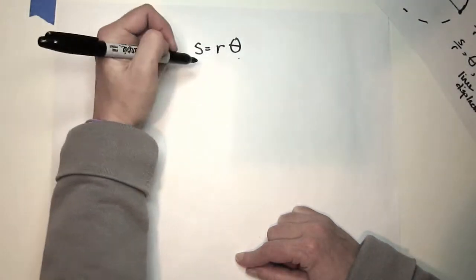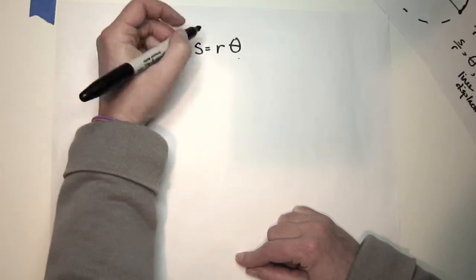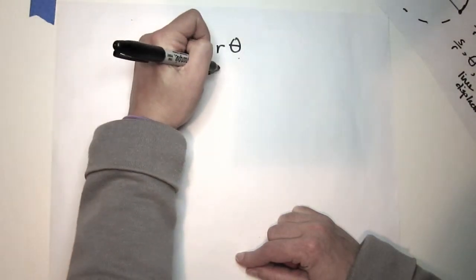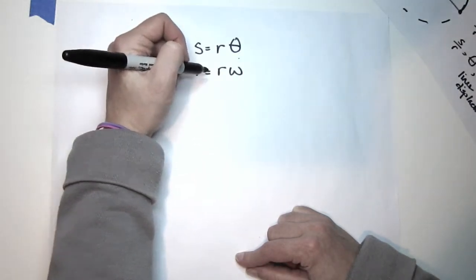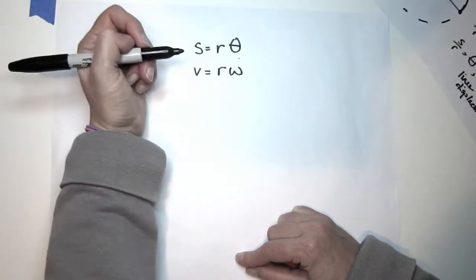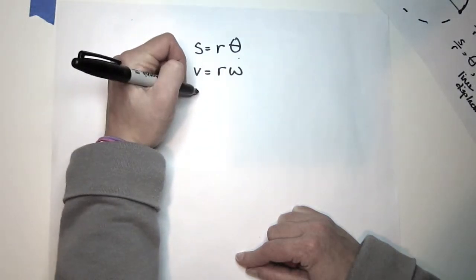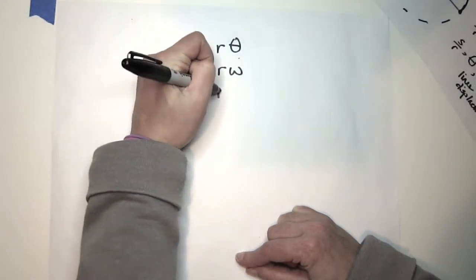Since this is true, everything else follows the same way. Velocity equals R times angular velocity. So if we want to know the linear speed of an object moving in a circle, if we know the angular speed and the radius, we can make that translation. And finally, A equals R alpha.